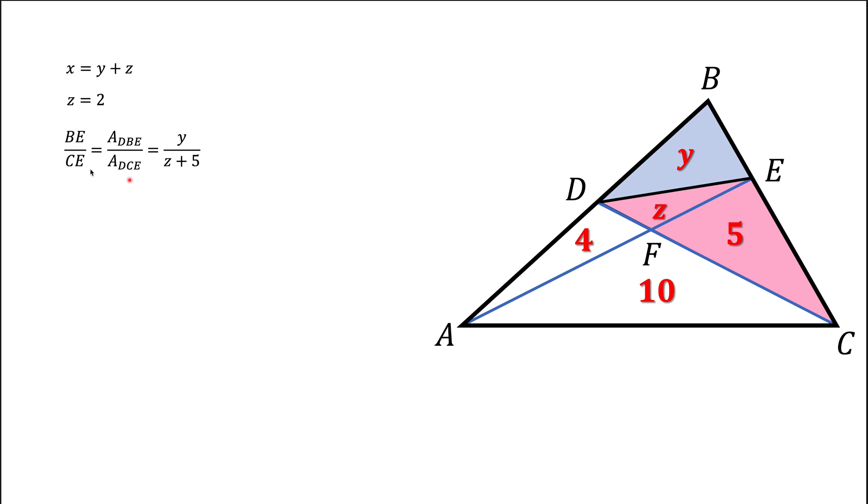But the same ratio of the sides BE over CE could be obtained by taking the ratio of other two triangles, this green triangle and this yellow triangle.